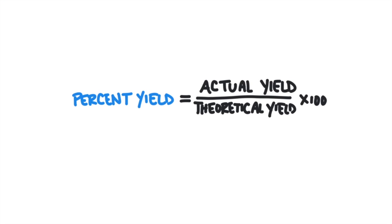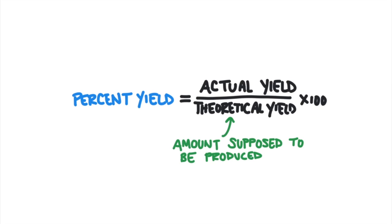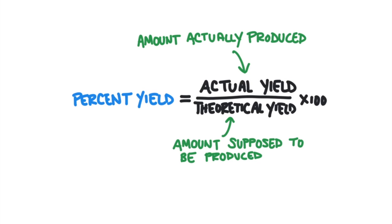Percent yield is a method of comparing the amount of product that was produced — called the actual yield — to the amount of product that was theoretically supposed to be produced, called the theoretical yield. Percent yield is calculated as: actual yield divided by theoretical yield, times 100. The closer to 100%, the better. The theoretical yield is always the amount of product formed when the limiting reactant is completely used up.